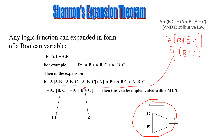The general theorem states that F is equal to A dot F plus Ā dot F, where F is the Boolean function. Whatever may be the expression, it can be represented in the form of A dot the whole function plus Ā into the whole function.